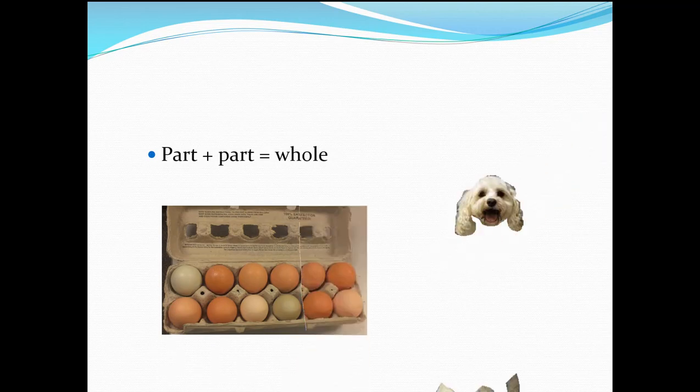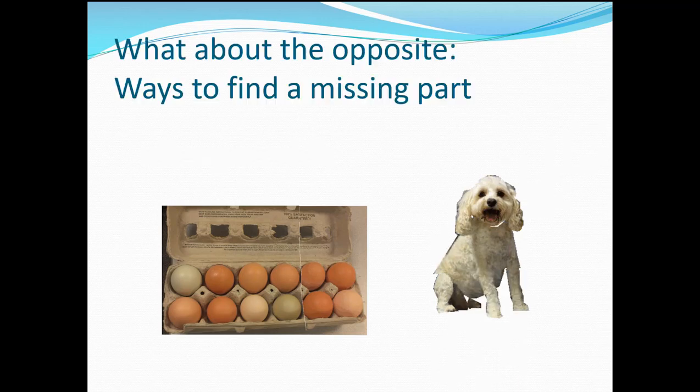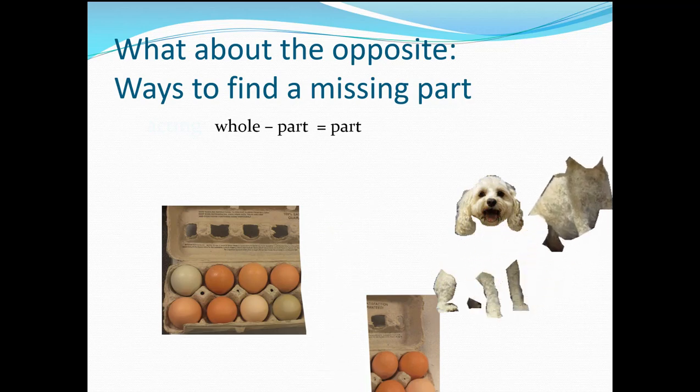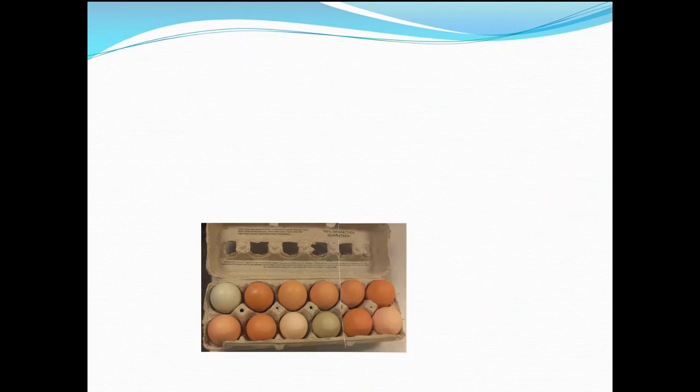We multiply or add parts together to get a whole, but what about the opposite ways to find a missing part? Whole minus part equals part, or part plus missing part equals whole. We use subtraction to find that answer.